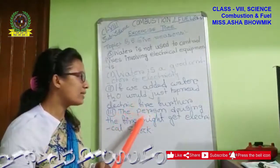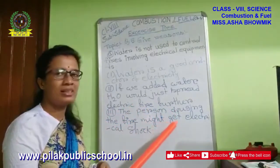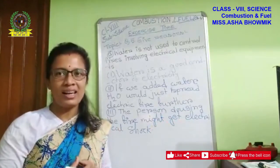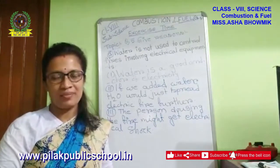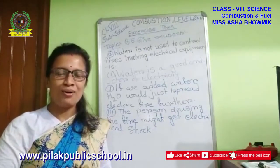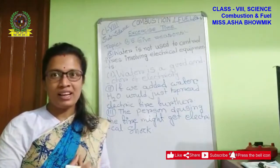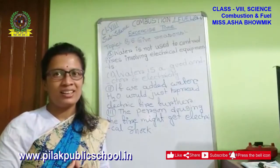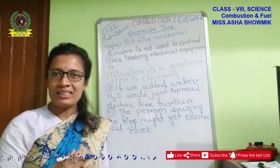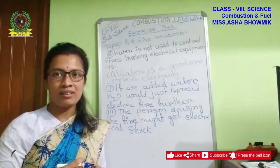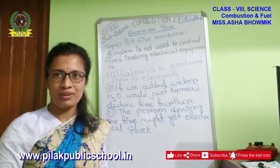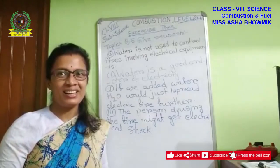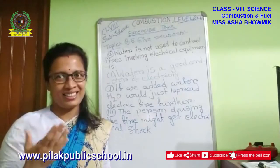The third point is: the person dousing the fire might get electric shock. So due to these three reasons, we cannot use water as an extinguisher to control electrical fire. My expectation is that all of you get an idea and also be careful — when any electrical fire occurs in your home or surroundings, you cannot use water to control it. Thank you so much, and I hope you got a clear idea from my discussion. See you again in our next class. Ta-ta!